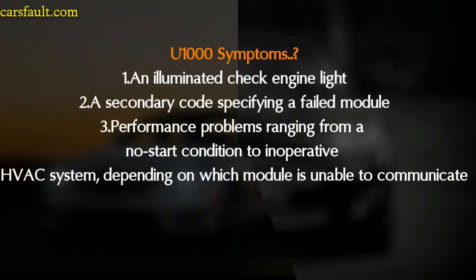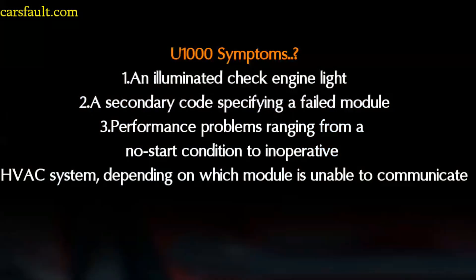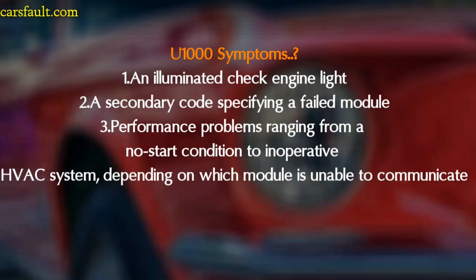Now let's talk about the symptoms of the U1000 code. The first symptom is an illuminated Check Engine Light. The second is secondary codes pointing to a failing module. The third symptom is performance problems ranging from a no-start condition to an inoperative HVAC system, depending on which module is unable to communicate.